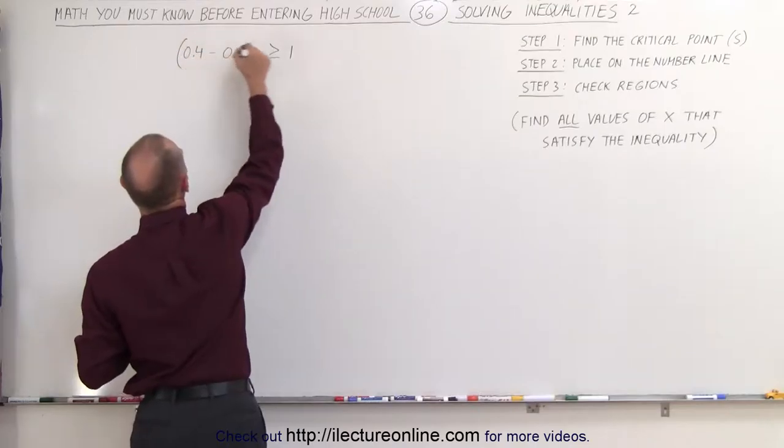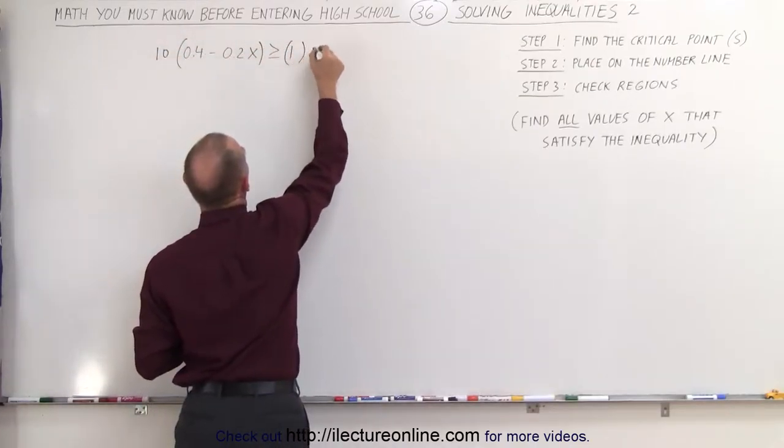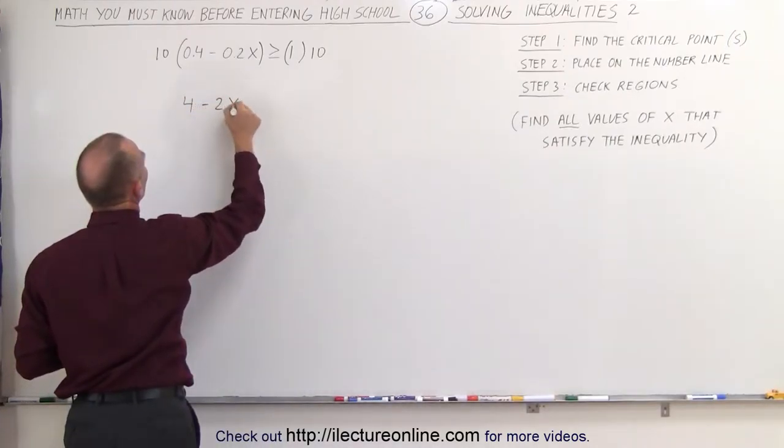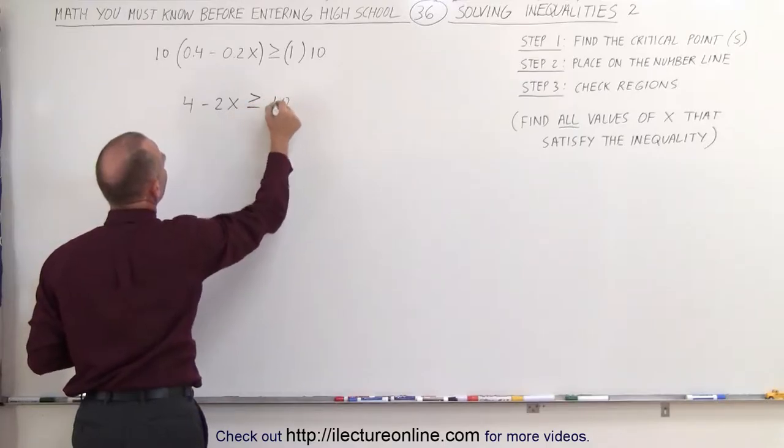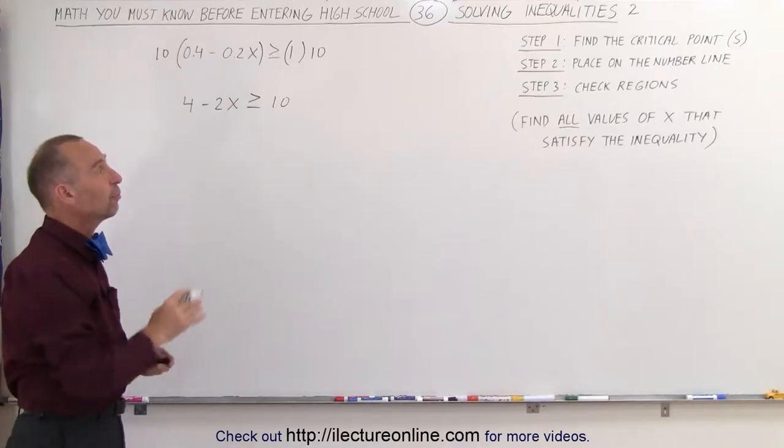So we're going to multiply the left side by 10 and the right side by 10, which means on the left side we end up with 4 - 2x ≥ 10. Now it's a lot nicer to work with. We're still going to follow the same steps as before.